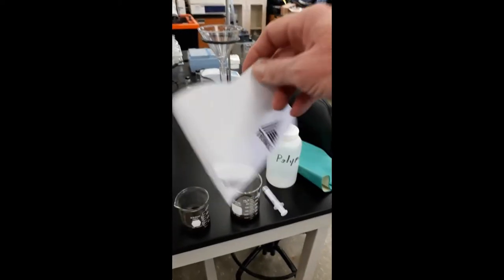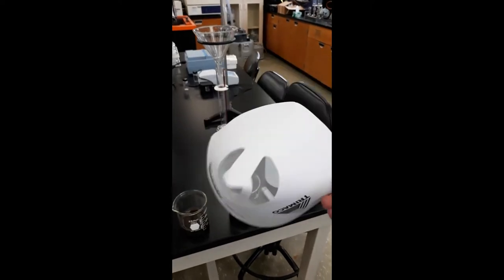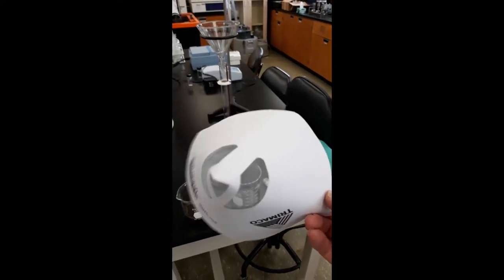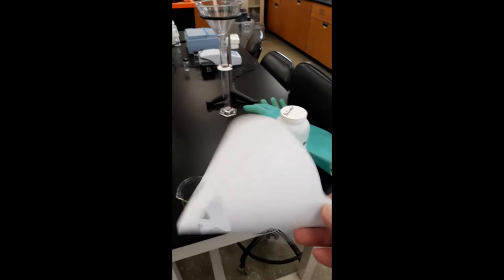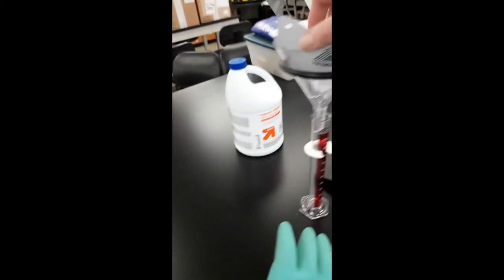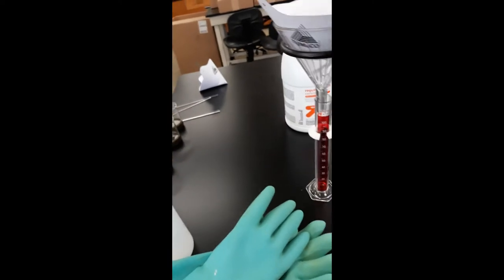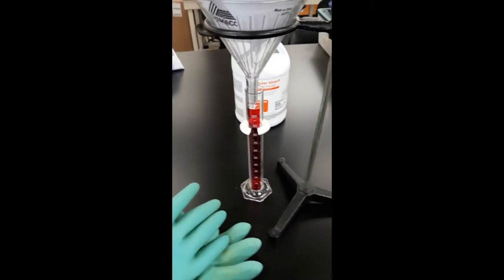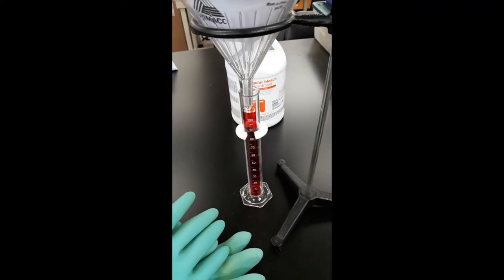Then we're going to use one of these paint filters. They make them a lot cheaper now, they used to have more filter to them. We'll put that in the funnel and pour the sludge in there, and we'll measure how much water falls into there in a five minute period.